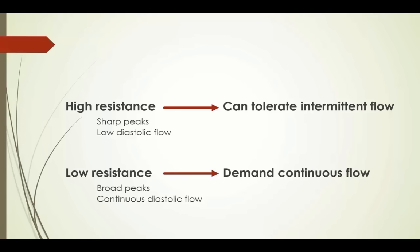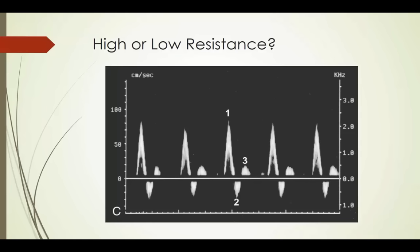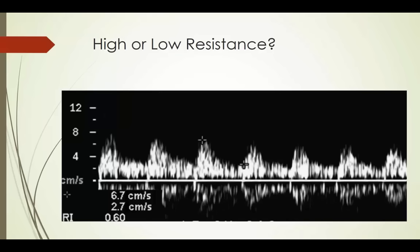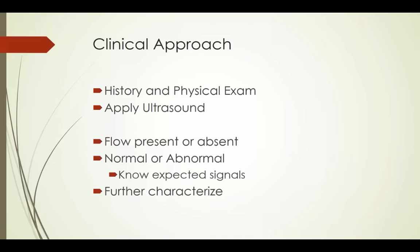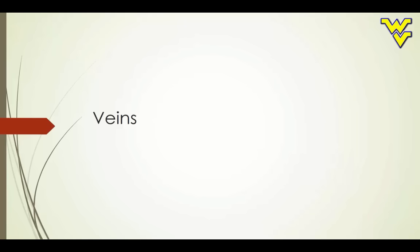To summarize: high resistance means sharp peaks and low diastolic flow — these are structures that can tolerate intermittent flow, like your extremities at rest. Low resistance means broad peaks and continuous diastolic flow — these go to structures that need continuous flow, like your brain. Clinically, we always start with history and physical exam. Then we apply ultrasound: first, is flow absent or present? If absent, that's bad. If present, is it normal or abnormal? Then we characterize it further.